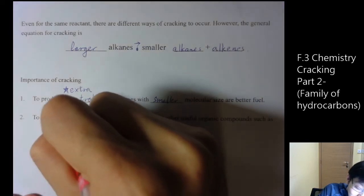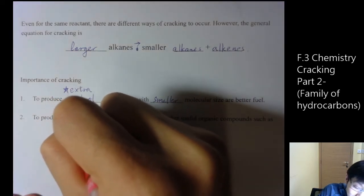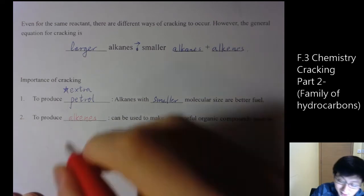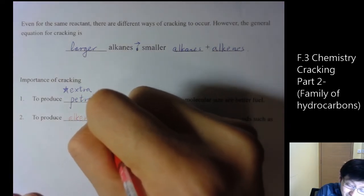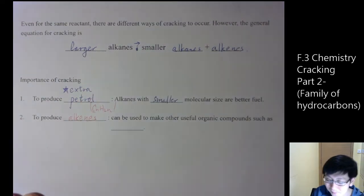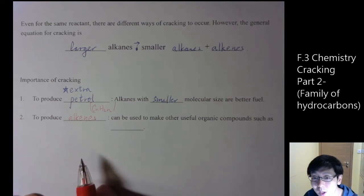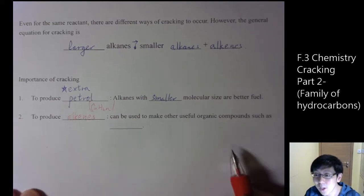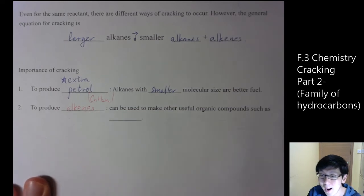The cracking process produces alkenes. These alkenes can be used to make other important useful organic compounds.